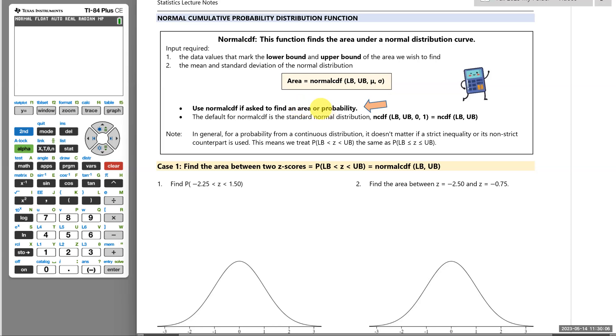Finding an area will be equivalent to asking for a probability. The reminder here is when we use NCDF, the default for our calculator is standard normal. So if we don't enter mu sigma, we're going to assume it means standard normal where mu is zero and sigma is one. We'll leave off typing those in the calculator.